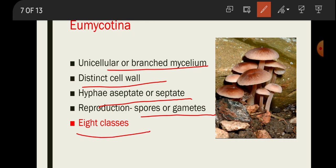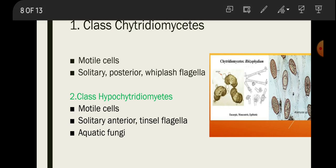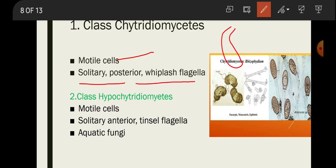The first subclass is Chytridiomycetes, the most primitive class. The cells are motile with a solitary, posterior whiplash flagellum. A whiplash flagellum is one that is smooth — it has no hair-like structures on its surface.